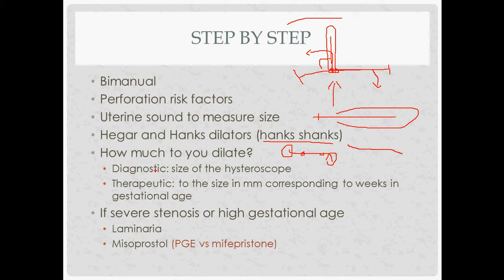How much to dilate depends on the procedure. For a diagnostic procedure or hysteroscopy, you dilate to the size of the scope, wanting a fairly snug fit so that distension medium used to inflate and visualize the uterus doesn't leak out. For a therapeutic procedure, you dilate in millimeters corresponding to weeks of gestational age — so at seven weeks, dilate to seven millimeters.